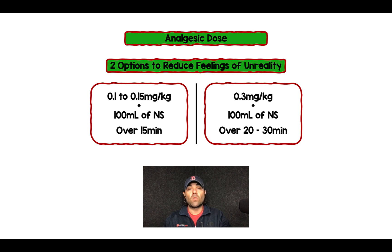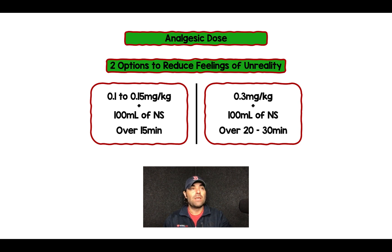If that doesn't work, you can always give a second dose. Another option would be the 0.3 milligrams per kilogram in 100 cc's of normal saline, but instead of running it over 15 minutes, maybe stretch that out over 20 to 30 minutes, so you get fewer patients with feelings of unreality. Since I've started doing one of these two things, I've had fewer patients telling me they don't feel good on this medication, and it's a nice opioid-sparing medication.